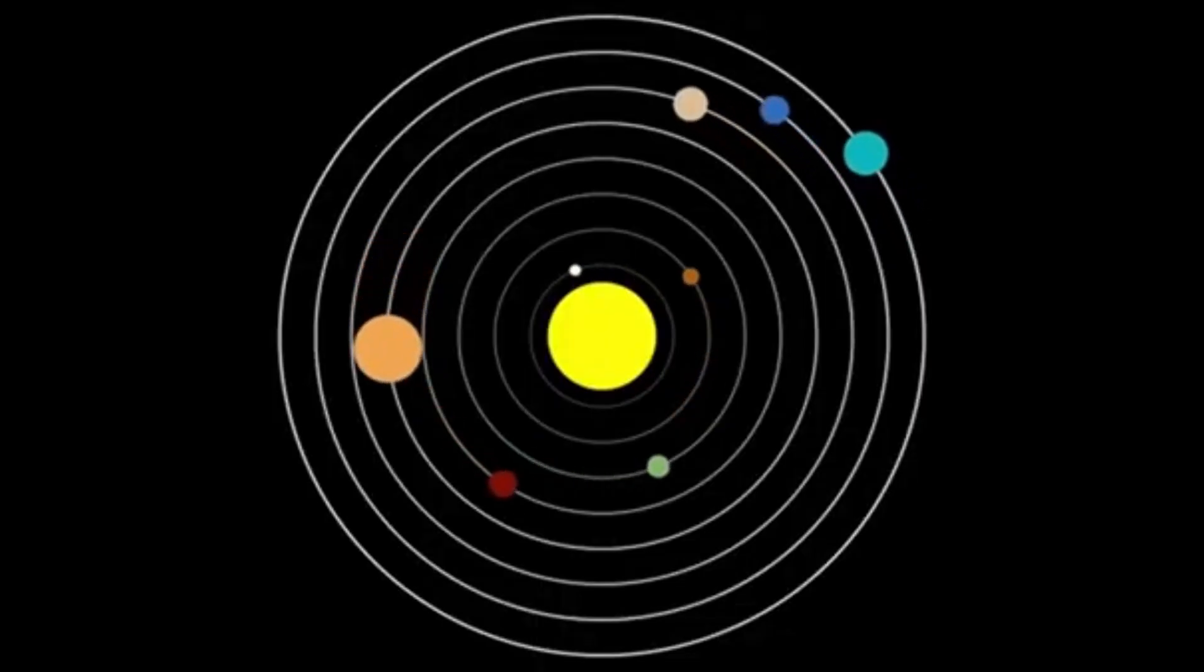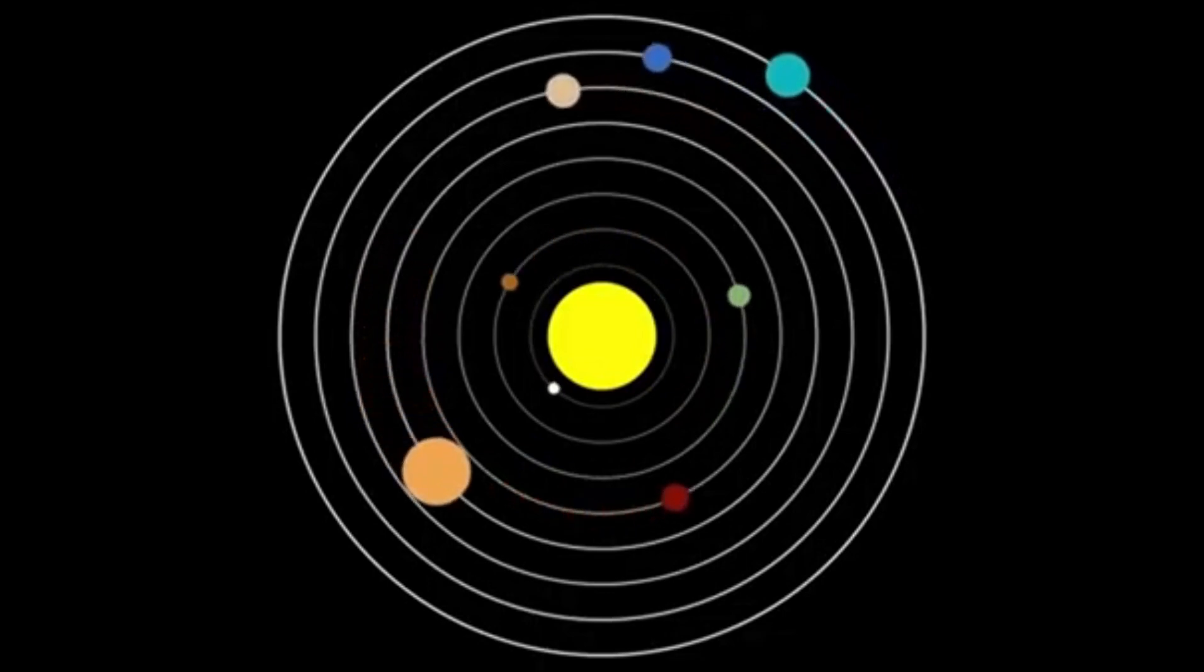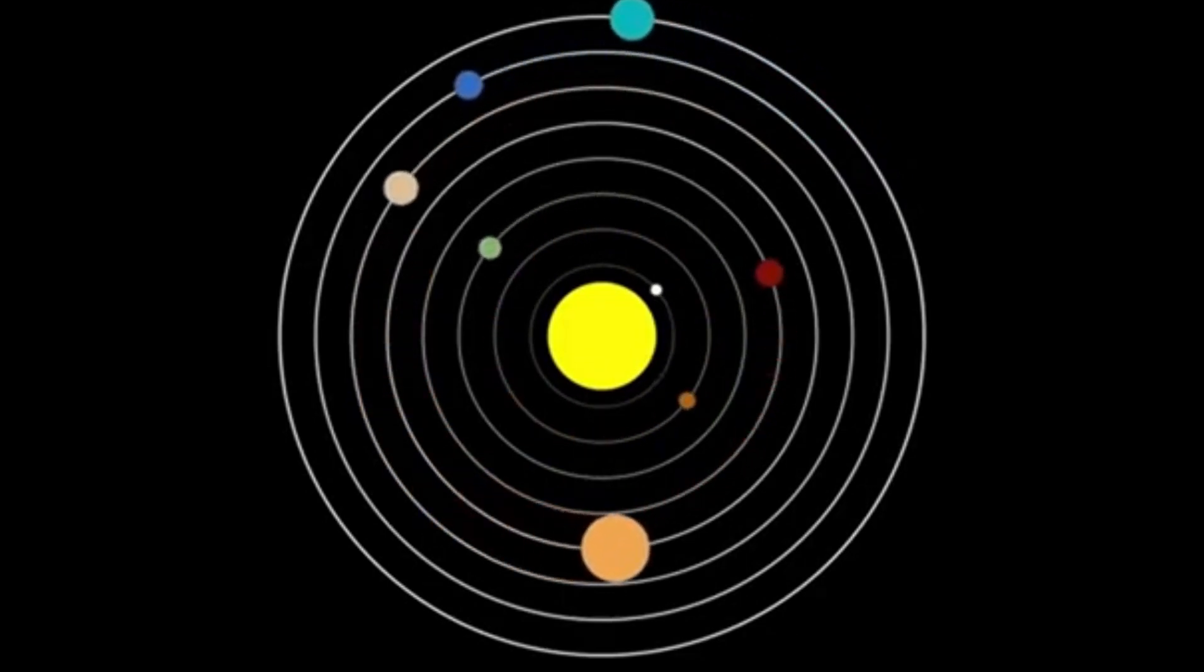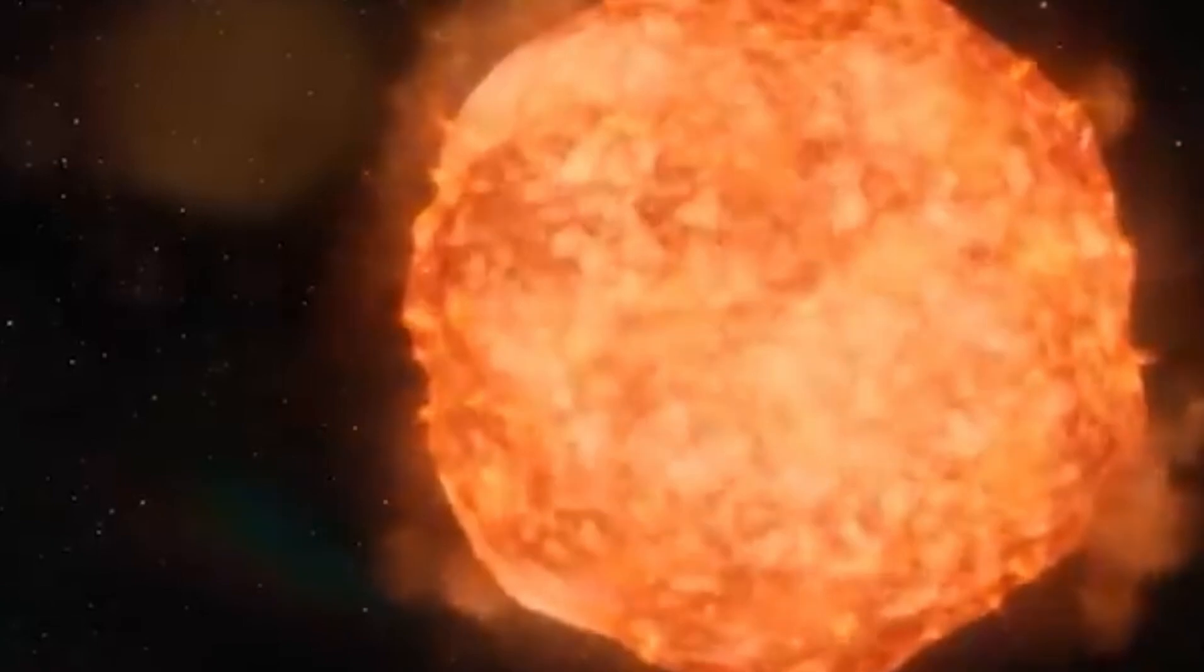From a hot blue star to the red giant we see today, the life cycle of stars like Betelgeuse is a story of transformation, driven by the relentless forces of nuclear fusion and gravity.